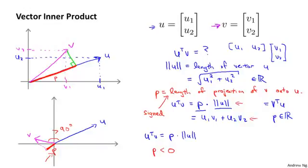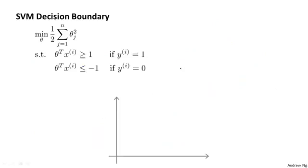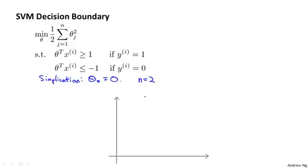That's how vector inner products work. We're going to use these properties to better understand the support vector machine optimization objective. Here's the optimization objective for the SVM. For this analysis, I'm going to make one simplification: I'll ignore the intercept term — set theta_0 equal to 0. To make things easy to plot, I'll also set n, the number of features, equal to 2. So we have only two features, x1 and x2.